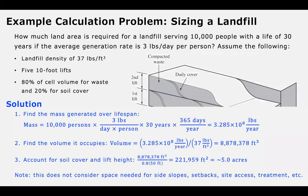We then find the volume it occupies by taking 3.285 times 10 to the eighth pounds divided by 37 pounds per cubic feet. That gives us units of cubic feet — pounds cancel out — and we have 8.878 million cubic feet. We then divide that by 0.8 to account for the soil cover, and also divide by 50 feet, which is the total height of the lifts. That gives us a value of 221,959 square feet, which is approximately equal to five acres.